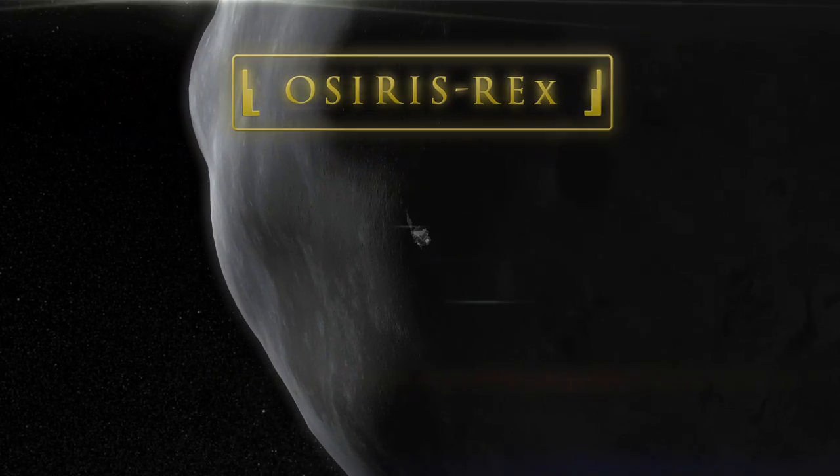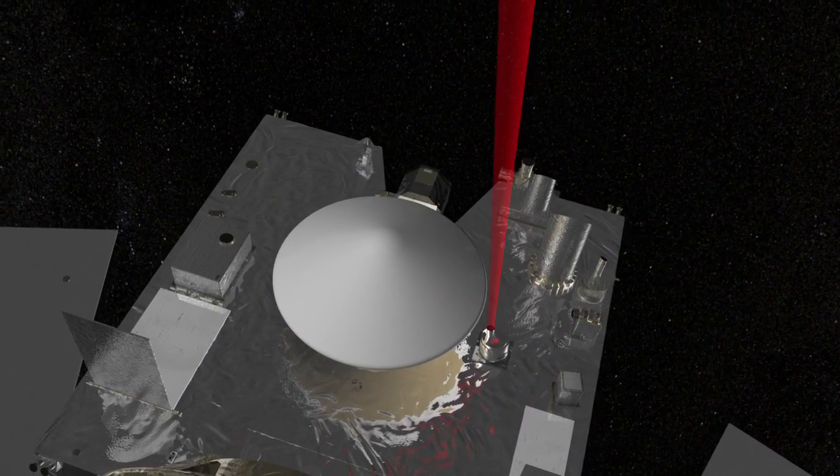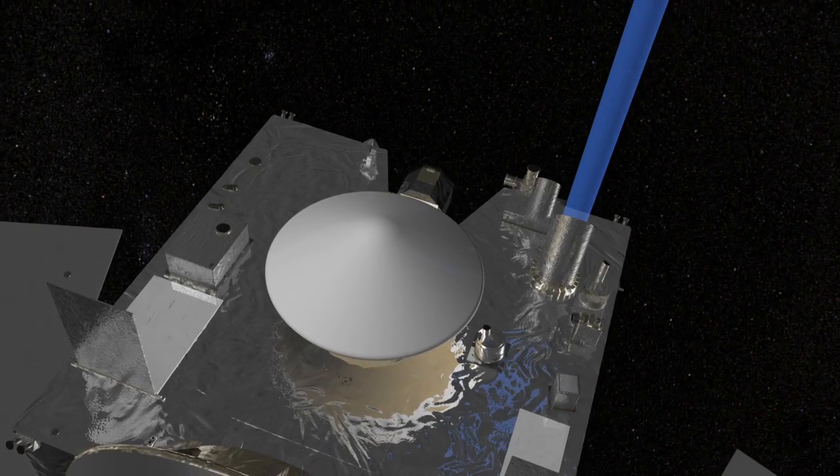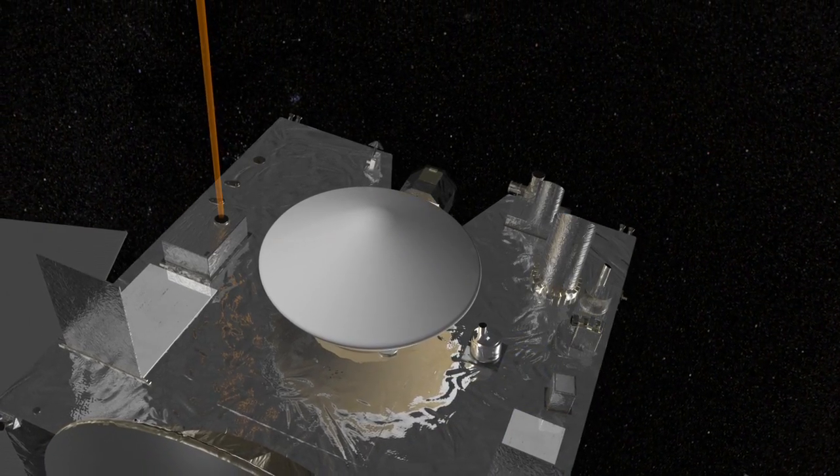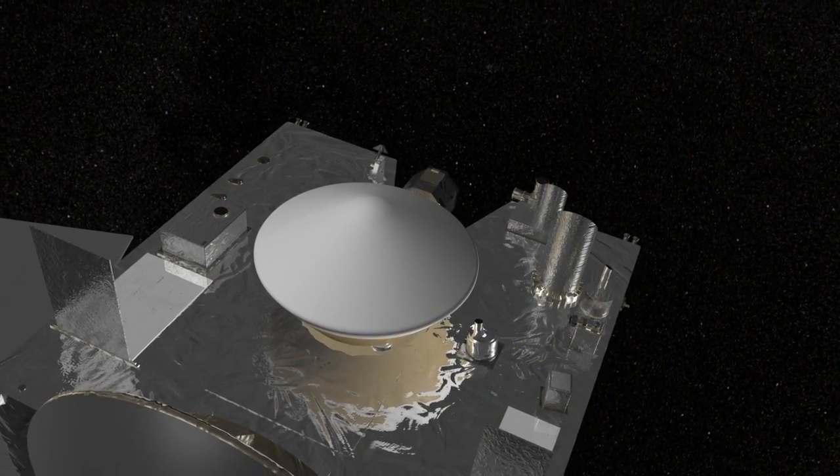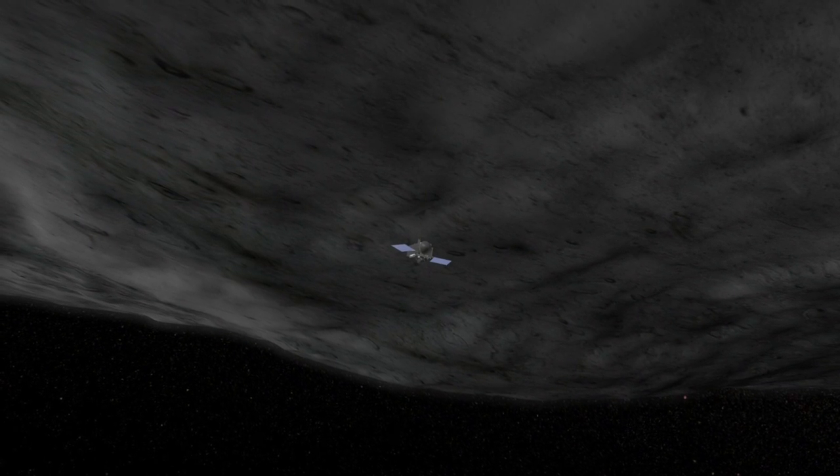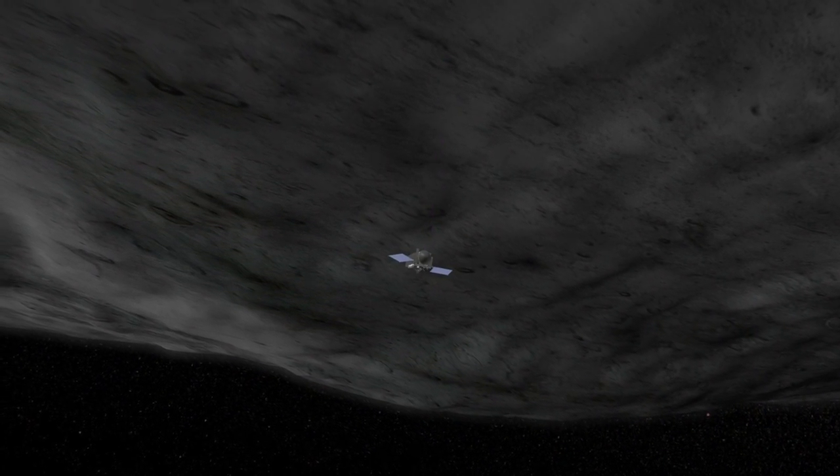To study a near-Earth asteroid called Bennu, OSIRIS-REx will launch in 2016 and arrive at Bennu in 2018, where it will spend over a year surveying the asteroid in unprecedented detail, determining its chemical makeup, mineralogy, and geologic history.